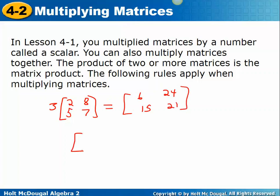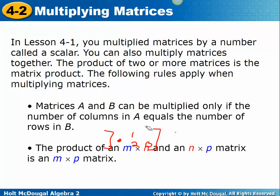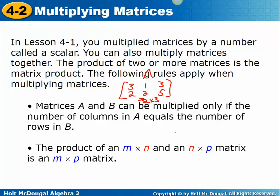When you multiply two matrices together, matrices A and B can be multiplied only if the number of columns in A equals the number of rows in B. Remember, when you talk about a matrix, we name it by its number of rows first and its number of columns second. So a matrix could be a 2 by 3. The number of columns in matrix A has to match the number of rows in matrix B.